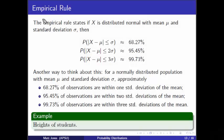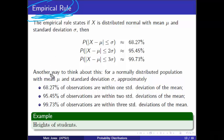Let's revisit the empirical rule. It turns out this empirical rule actually follows from probabilities under a normal curve — that's where the rule comes from. To see this, let's check it out.